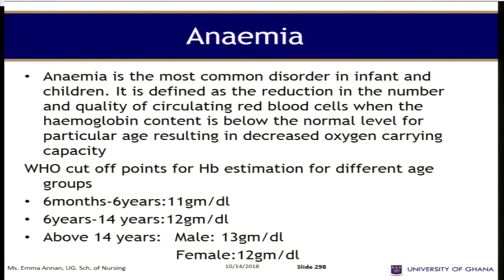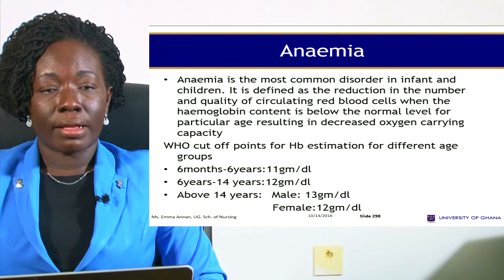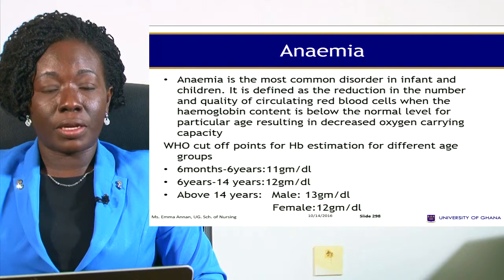The WHO cutoff point for hemoglobin estimation for different groups is as follows. From 6 months to 6 years: 11 grams per deciliter. From 6 years to 14 years: 12 grams per deciliter. Above 14 years, male is 13 grams per deciliter and female is 12 grams per deciliter.